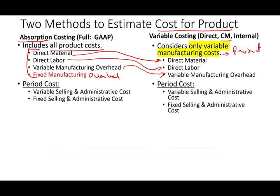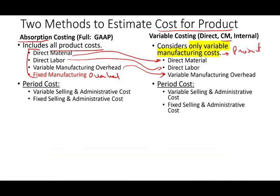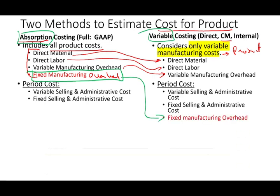The difference is: what happened to fixed manufacturing overhead? Under variable costing, it's not included in product cost. Instead, it's considered a period cost and gets expensed immediately.